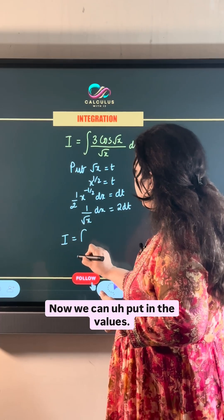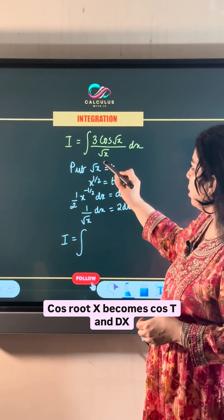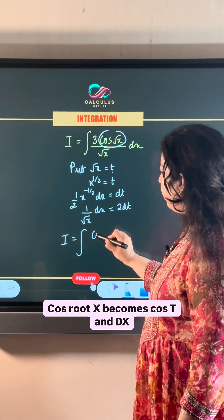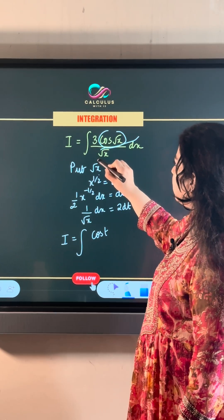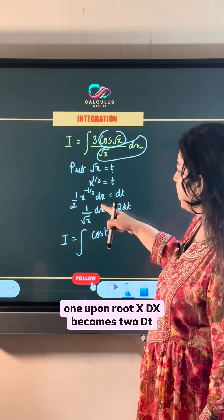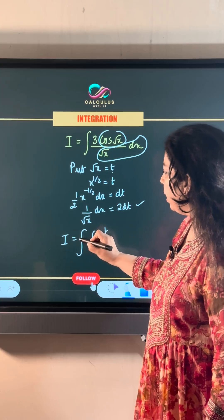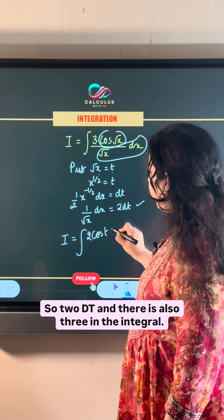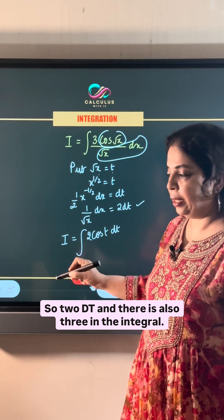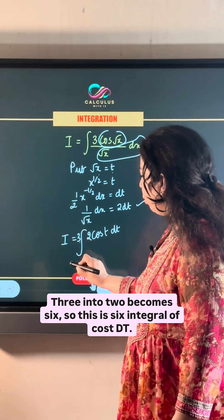Now, we can put in the values, cos root x becomes cos t and dx, 1 upon root x dx becomes 2 dt. So, 2 dt and there is also 3 in the integral, 3 into 2 becomes 6.